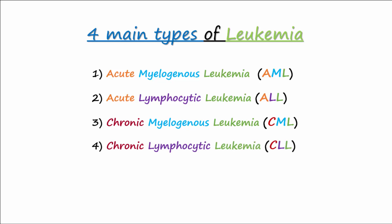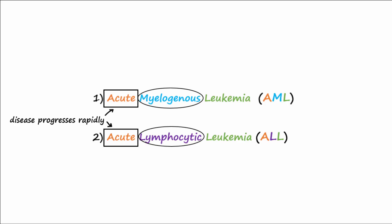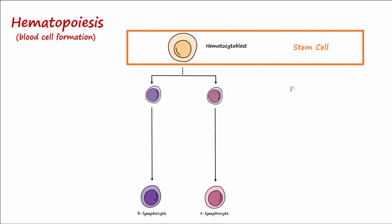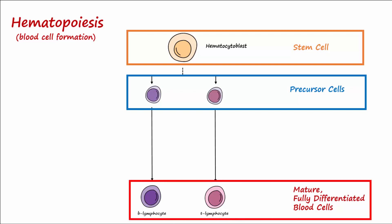Notice the two types of acute leukemia: AML and ALL. In acute leukemia, the disease progresses rapidly, and acute leukemia can be either myelogenous or lymphocytic depending on the stem cell lineage from which the leukemic cells arise. In the process of hematopoiesis, or blood cell formation, there are hematopoietic stem cells that ultimately give rise to intermediate types of cells known as precursor cells.